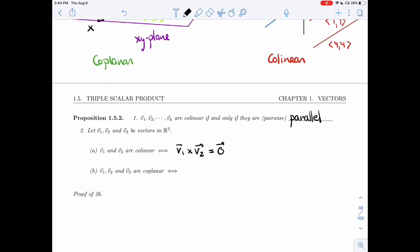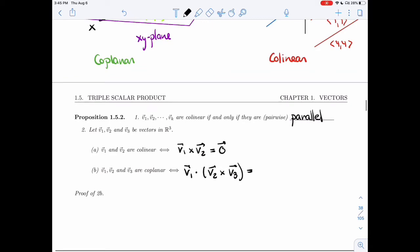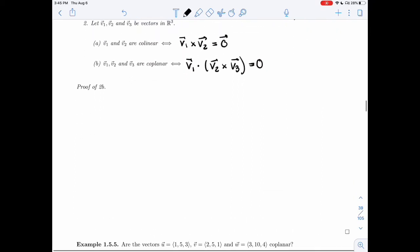And V1, V2, V3 are coplanar if and only if V1 dot V2 cross V3 is 0. Notice that one is the 0 vector, one is the 0 constant, 0 real number. Slightly different.